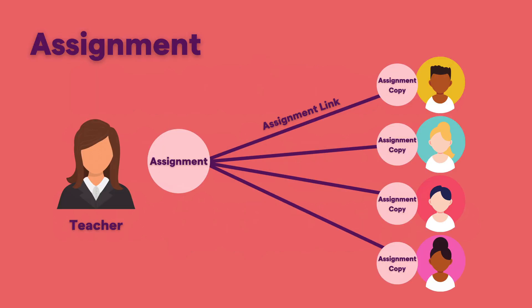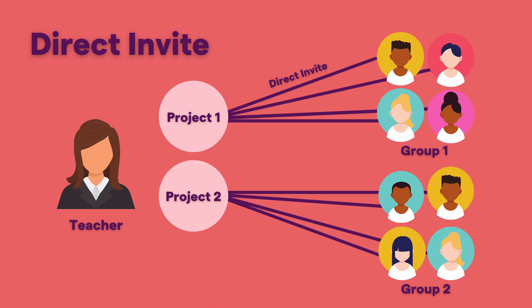This is a visualization to help you understand that when you create an assignment, it's going to create a copy for each student. You and that student will be a collaborator on that copy, and all students will have their own separate copies. A direct invite for a group project involves creating the project and then directly inviting each student to that project.